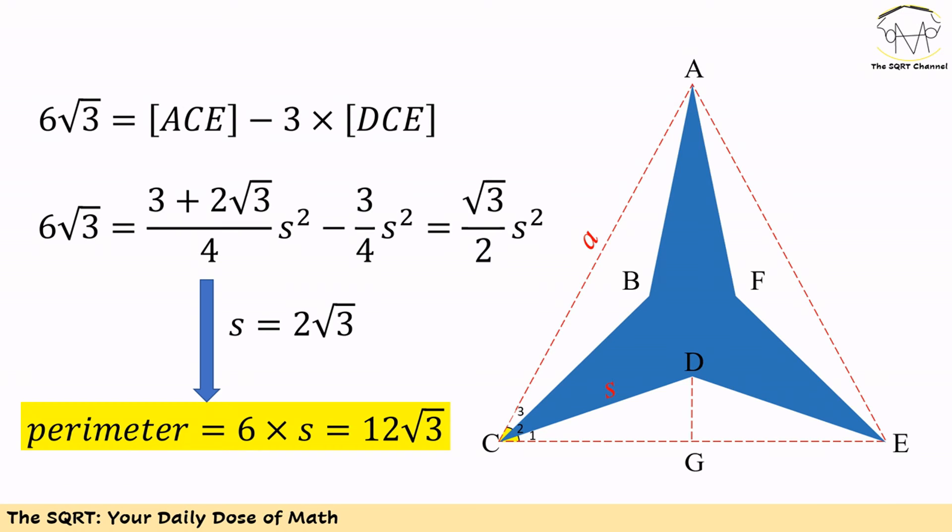Finally, we will find s as 2√3, so the perimeter of the polygon will be 6 times s or 12√3.